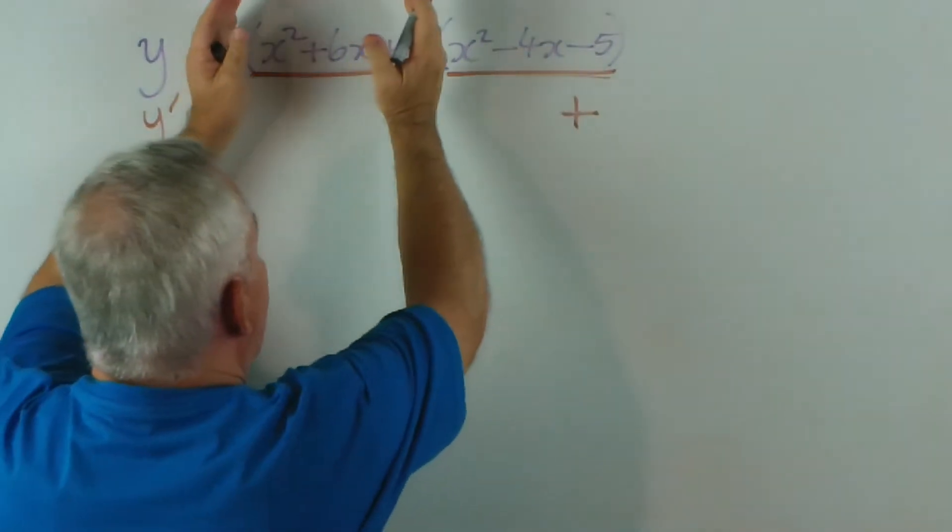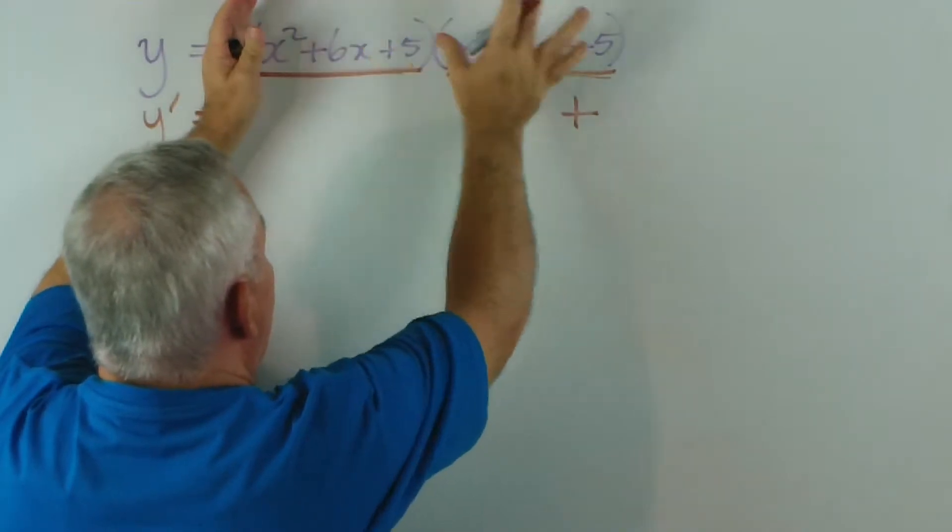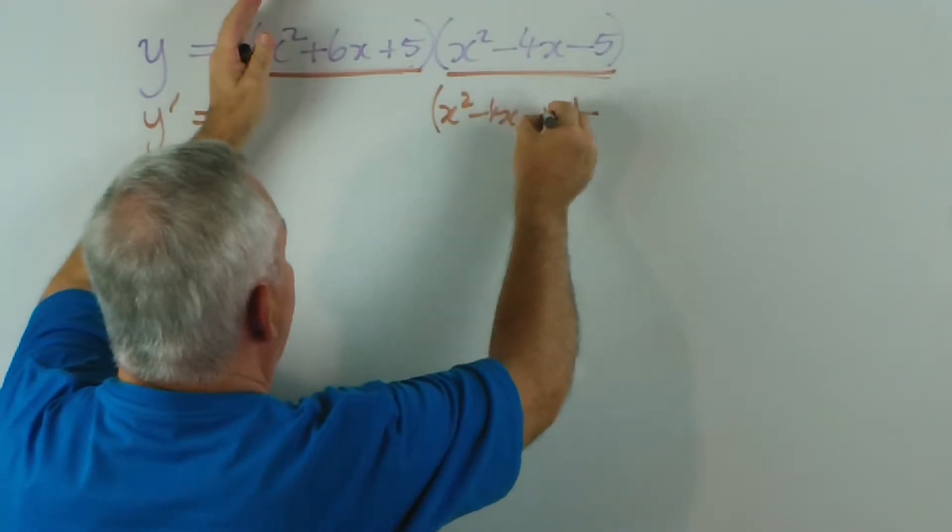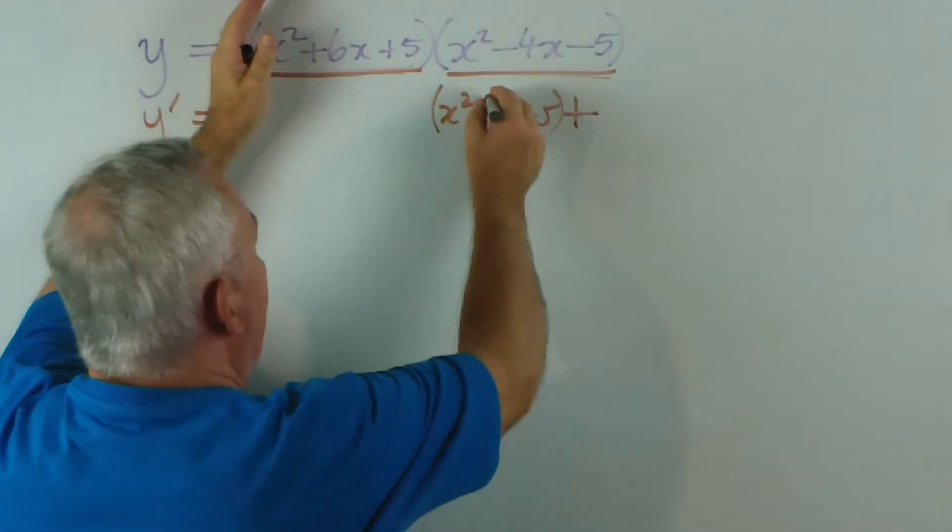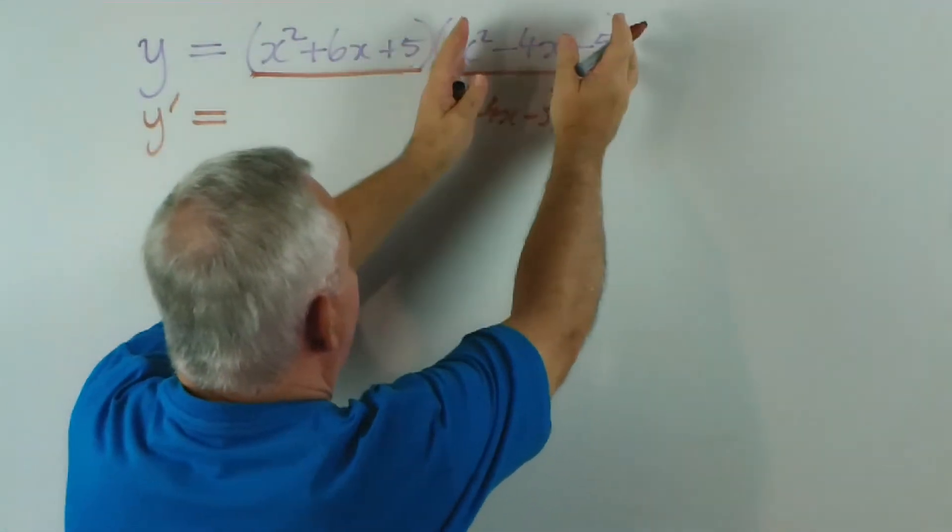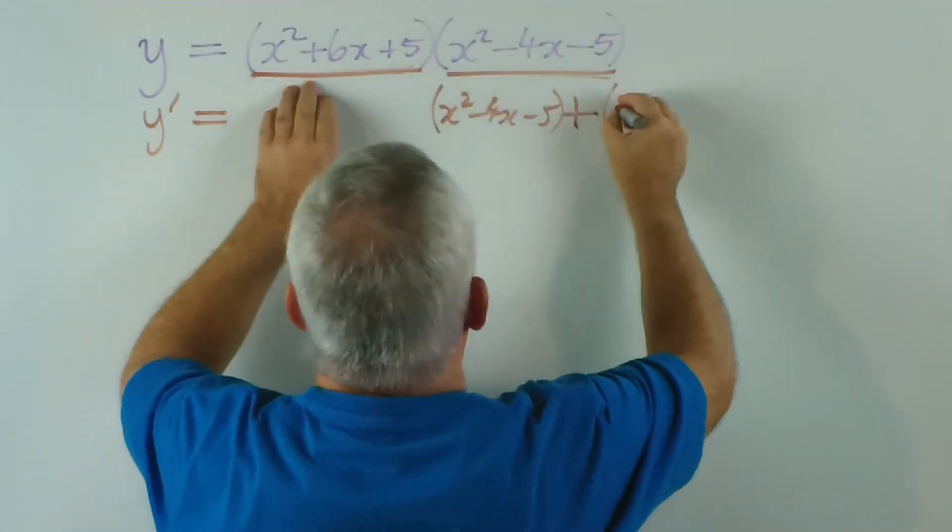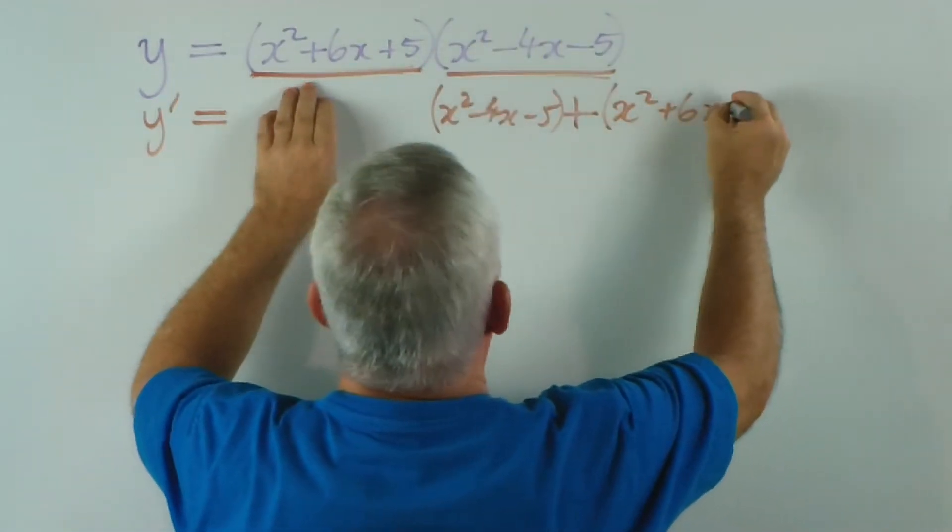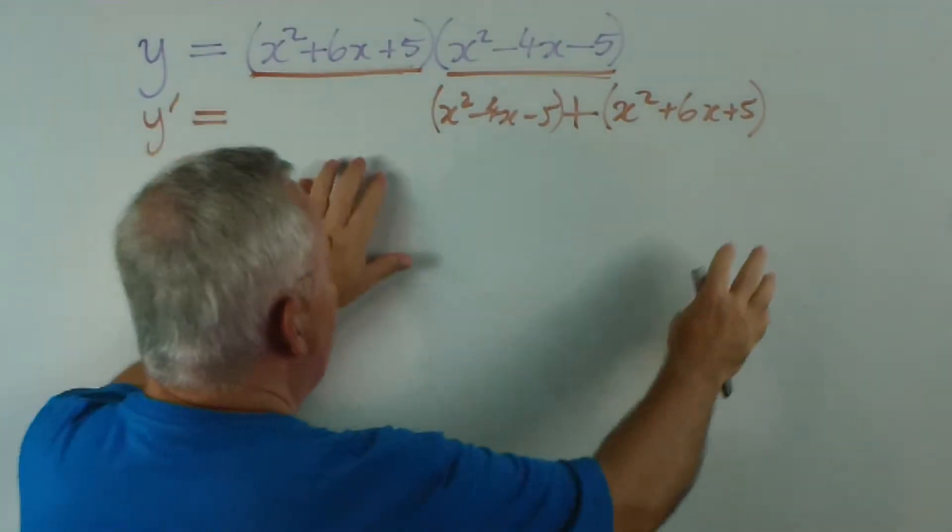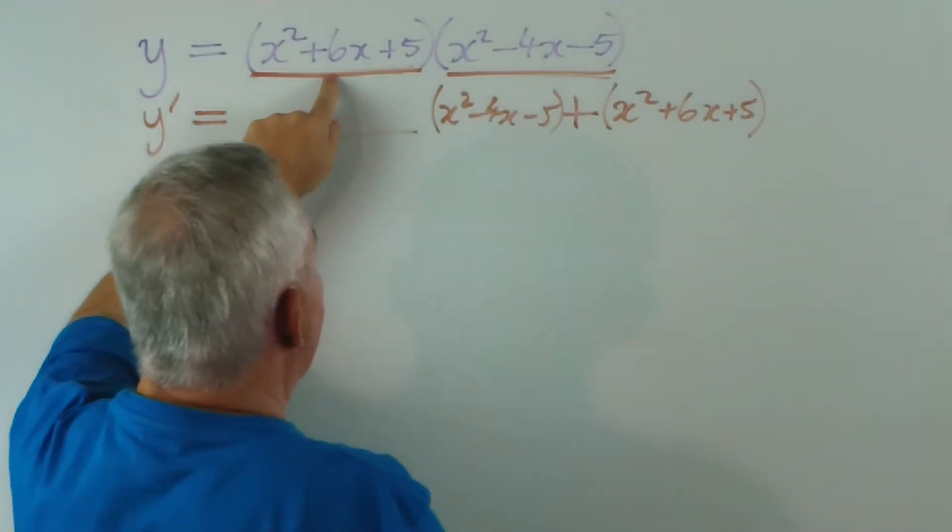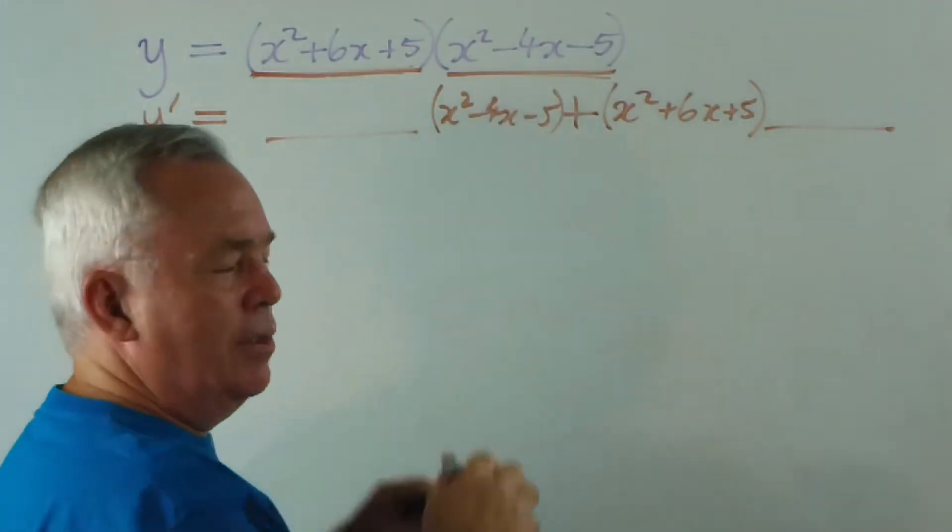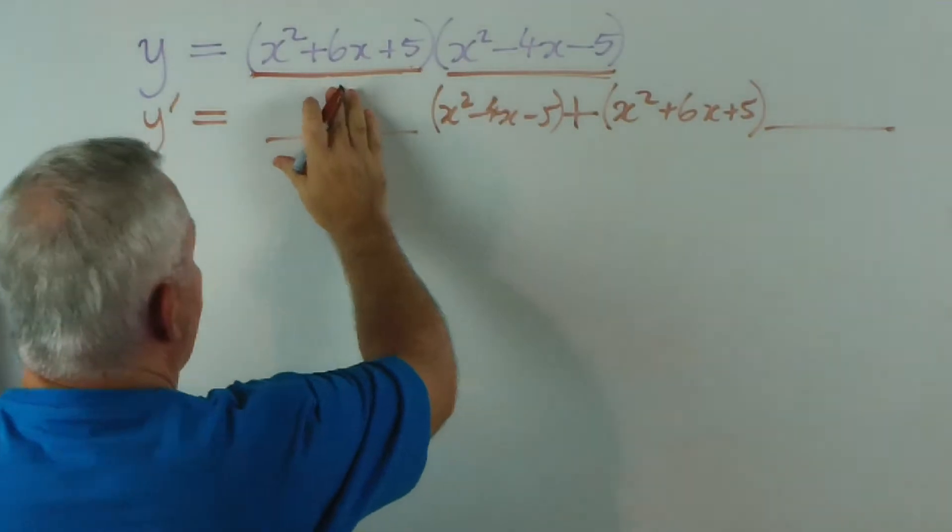Well, using the product rule, because there are two parts to this expression, we're going to have two parts to our result. The first part, we find the derivative of this, the first thing we encounter, and leave the second part alone. So I'm going to write that here. And, for the second expression, we're going to leave this part alone and find the derivative of the second bit. So I'll write this down here.